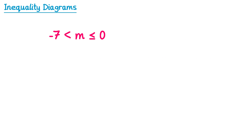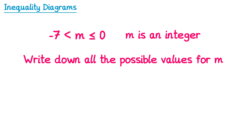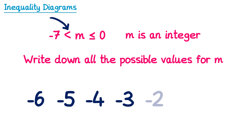Let's try another example: m is in between negative 7 and 0, m is an integer. The less than symbol means we can't include negative 7, but we can have 0 because it says less than or equal to next to that. So we start at negative 6: negative 6, negative 5, negative 4, negative 3, negative 2, negative 1, and we are allowed 0 because it says less than or equal to.